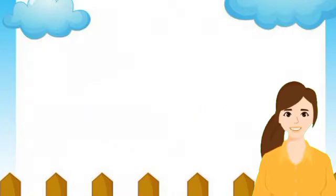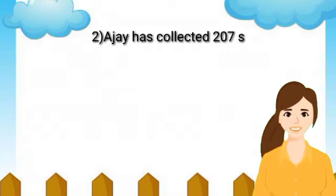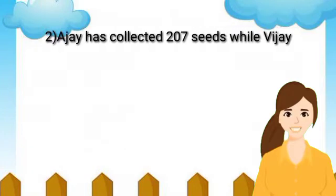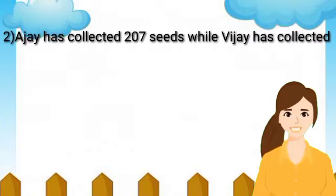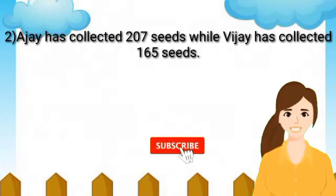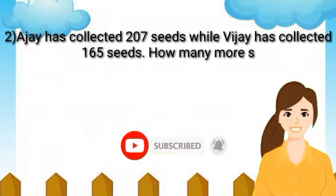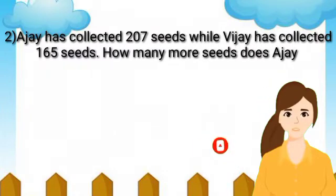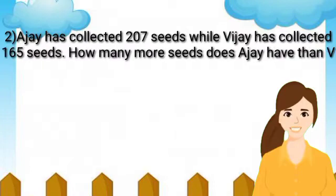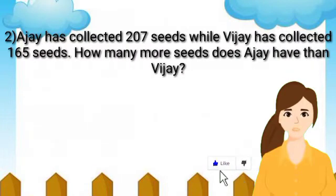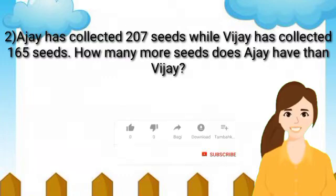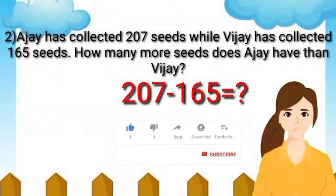Let's see the next example. Ajay has collected 207 seeds while Vijay has collected 165 seeds. How many more seeds does Ajay have than Vijay? We can find the answer by doing the following subtraction: 207 minus 165.